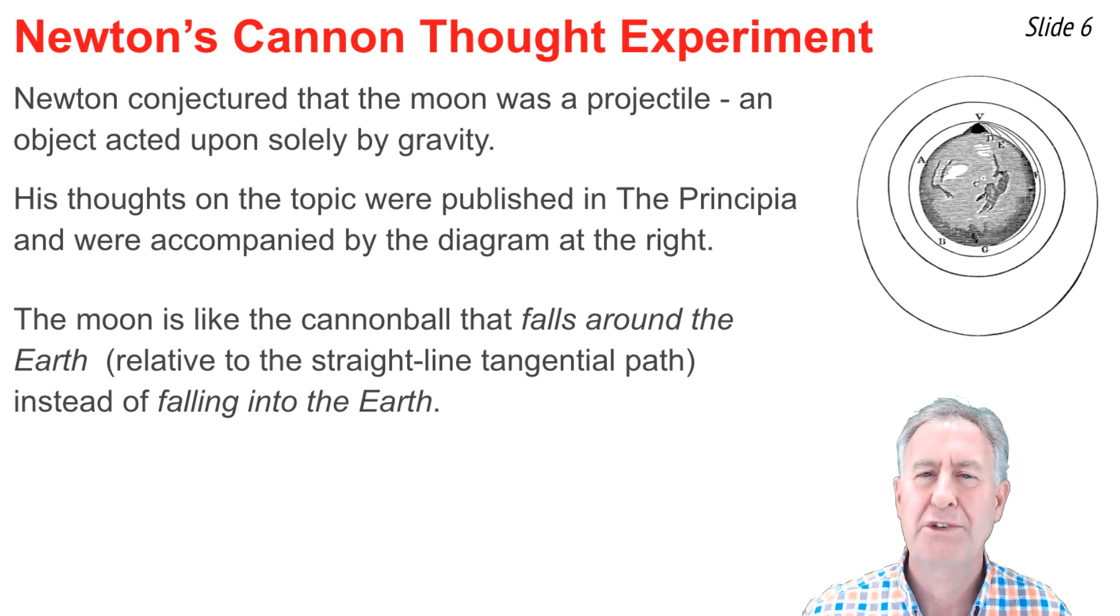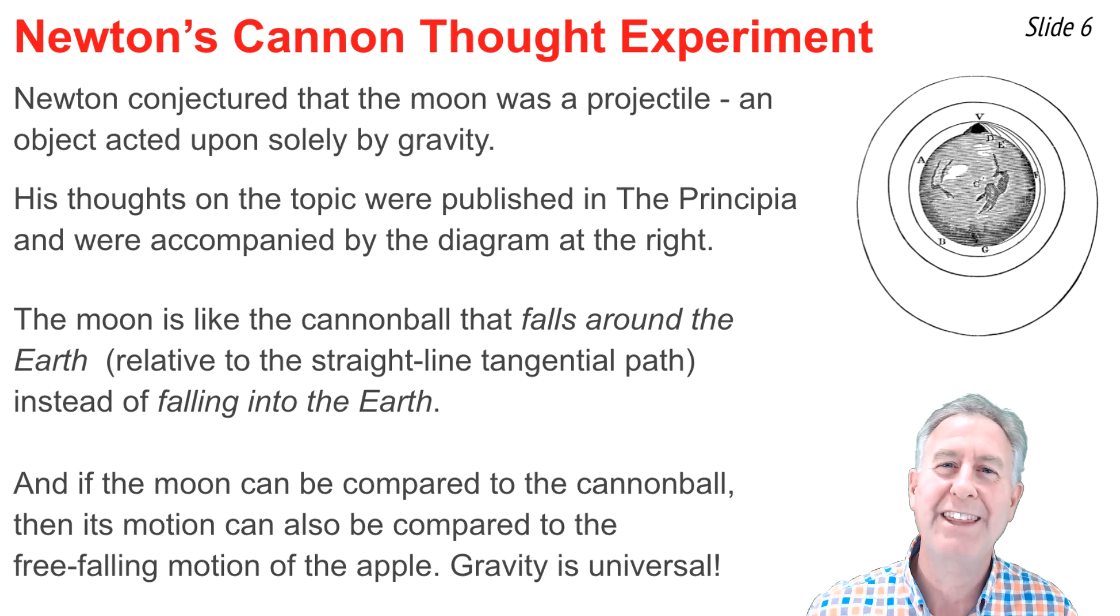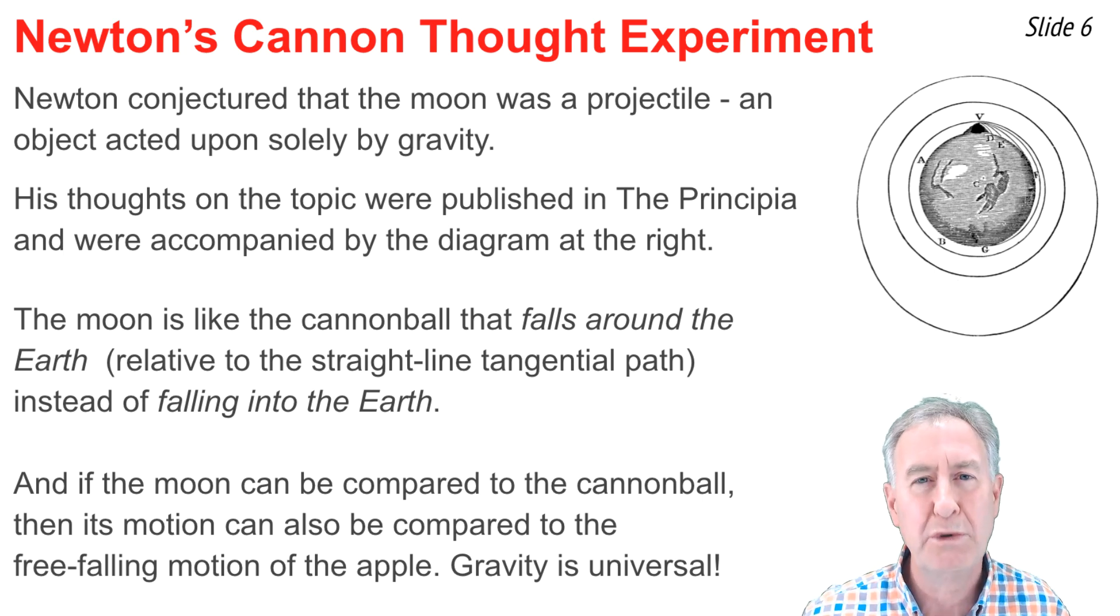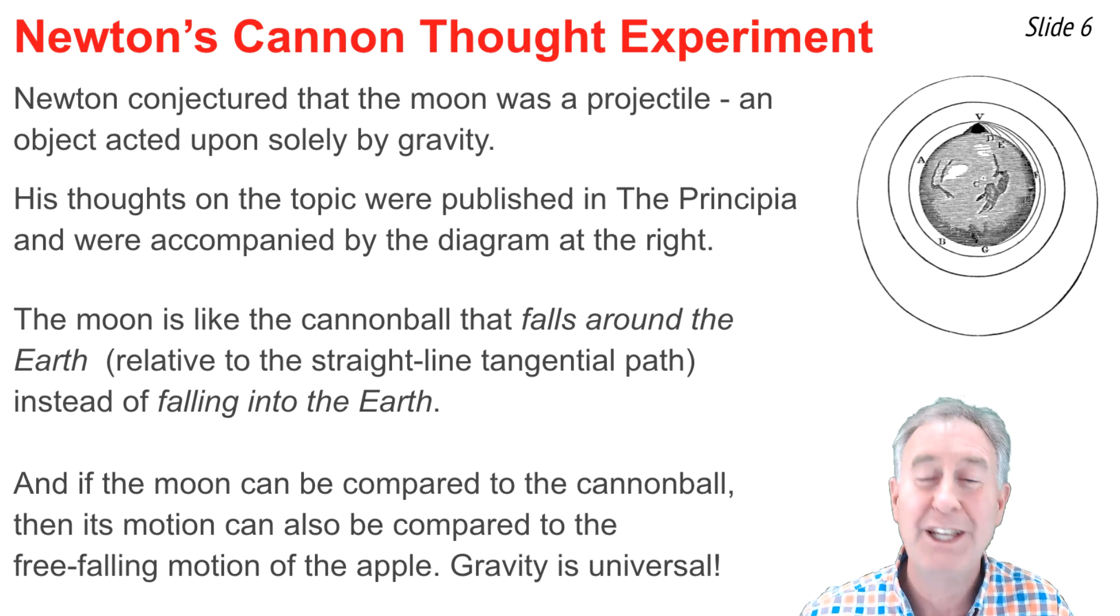And everybody knows that the cannonball is like the apple, for the force of gravity acts upon objects that are on or near the surface of the earth. So if the moon is like the cannonball, it's also like the apple that free-falls from the tree to the earth. Now all of a sudden, gravity is universal. It extends from the earth to the moon, and from the sun to the planets. Gravity is universal.